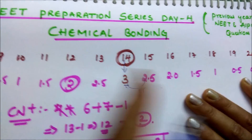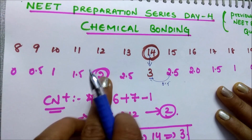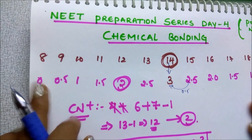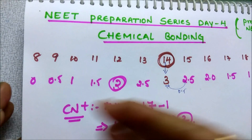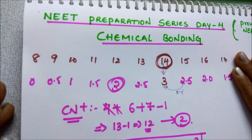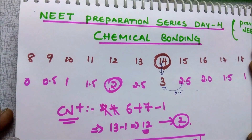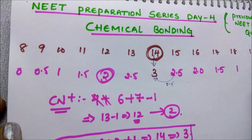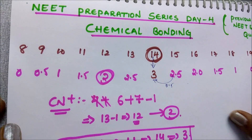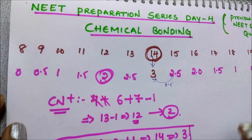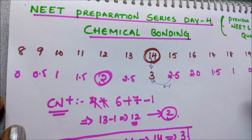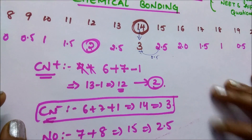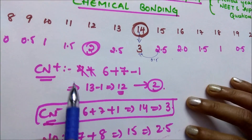On the other side also, decrease by 0.5 and write: 2.5, 2, 1.5, 1, 0.5, 0. If you want to know more, I already uploaded a video on this — go through the playlist for the chemical bonding chapter. You can solve still more questions using this approach.